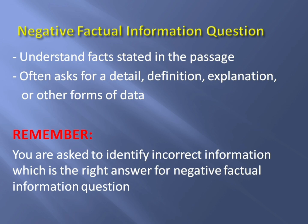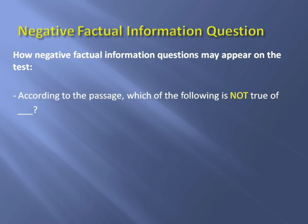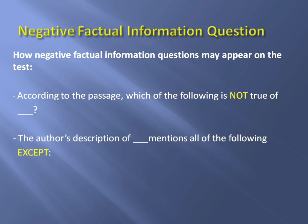The answer choice with the incorrect information is the right answer for this question. Now let's look into some examples of how a Negative Factual Information question may appear on the test. It may be asked as: 'According to the passage, which of the following is NOT true of blank?' or 'The author's description of blank mentions all of the following EXCEPT.' Notice that the words NOT and EXCEPT are in all caps — this is exactly how Negative Factual Information questions appear on the test. These capitalized words will also be your guide to avoid confusion between Factual and Negative Factual Information questions.